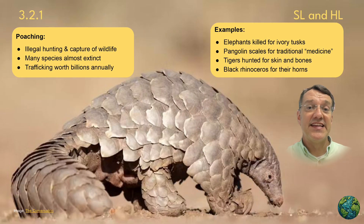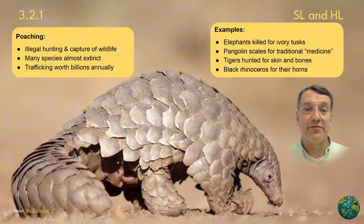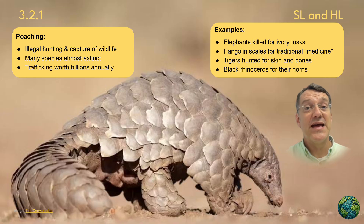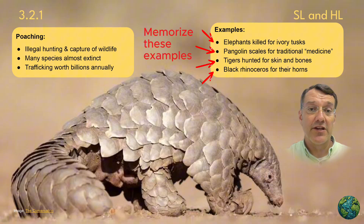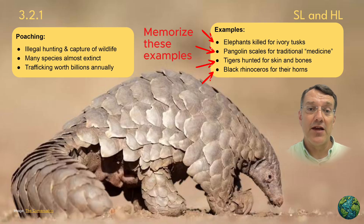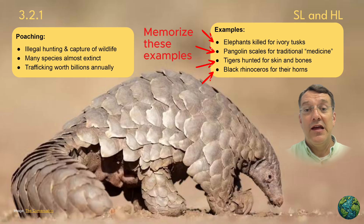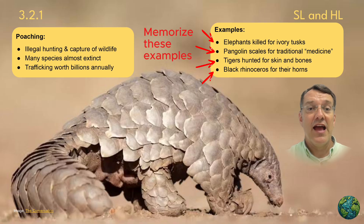Poaching is the illegal hunting and capture of wildlife, and it threatens many species with extinction. Elephants are killed for their ivory tusks, pangolins for their scales used in traditional medicine, tigers for their skin and bones, and rhinos for their horns.